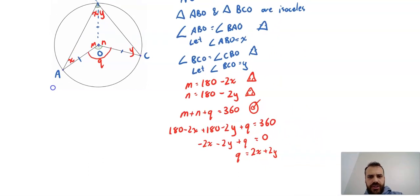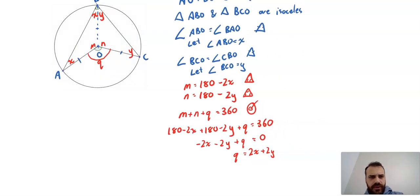Let's take a look at our picture. Q equals 2X plus 2Y. Q equals 2 times (X plus Y). We have proven it.